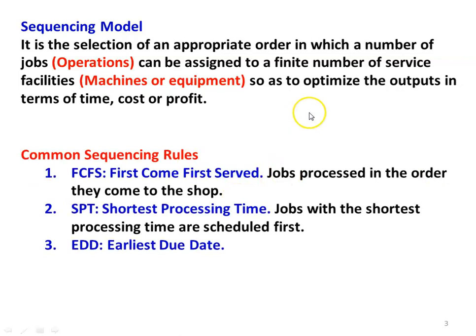Common sequencing rules: FCFS — first come first served — jobs are processed in the order they arrive at the shop. SPT — shortest processing time — the job with minimum processing time is given priority and scheduled first. EDD — earliest due date — depending on the due date, we select and sequence the job. But the majority of the time we use FCFS, first come first served.